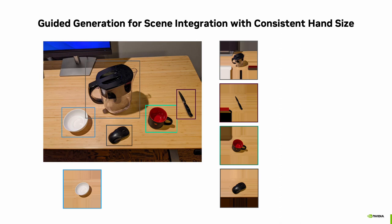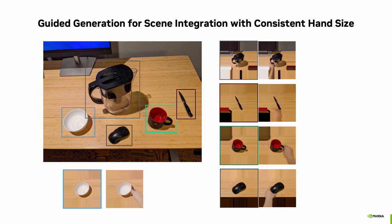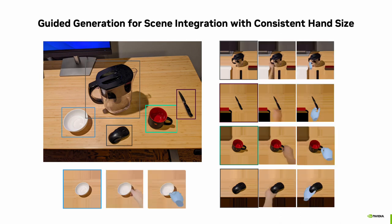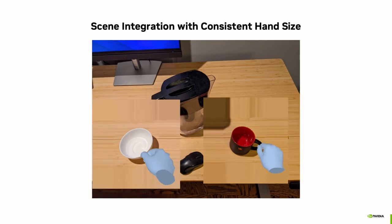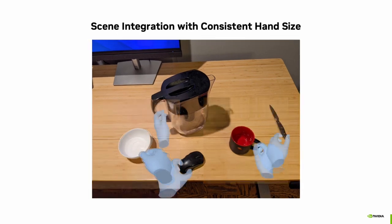Affordance diffusion can also be extended to scene-level prediction. We guide the system with proportional hand size in each object-centric crop such that the hand sizes are consistent when transferred back into the scene.